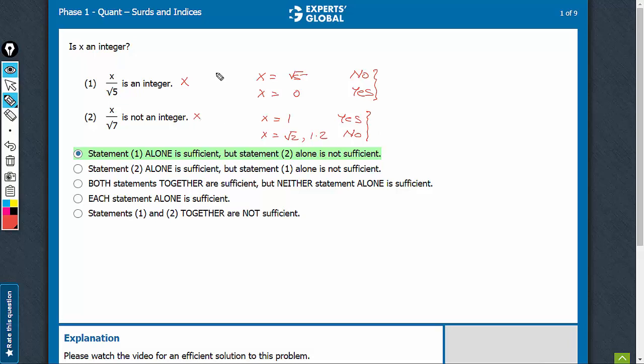However, on combining, see the exception we had here. The only case where we were getting yes is when x equals 0, but 0 over root 7 will be an integer. So 0 does not satisfy the second case. On combining, we cannot take x equals 0, so this case will be eliminated.